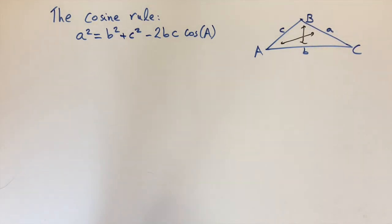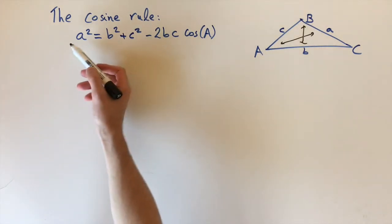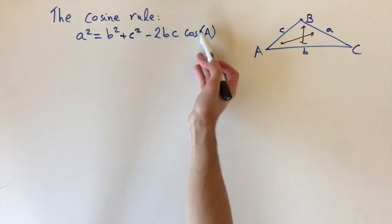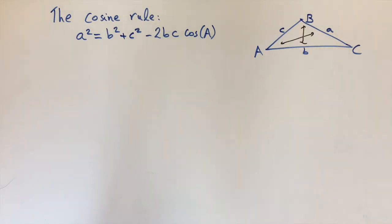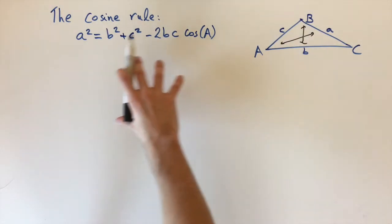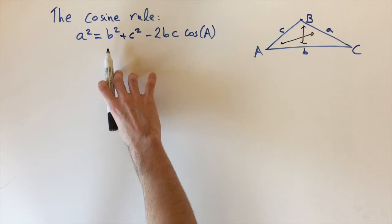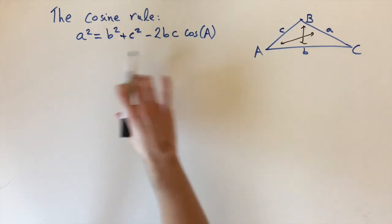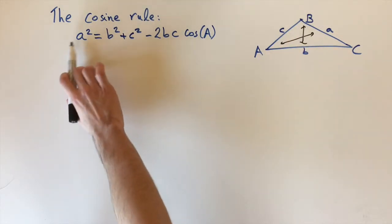This is really useful because we can use it to find the missing angle if we're given the three sides. If we know what a, b, and c are, we can work out what capital A is. Alternatively, if we have an angle and two sides, say b and c, then we can use it to find the missing side a.